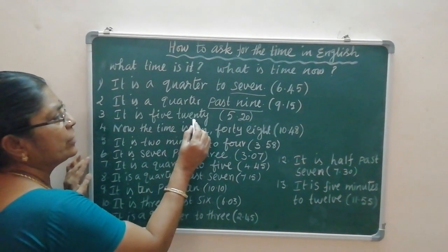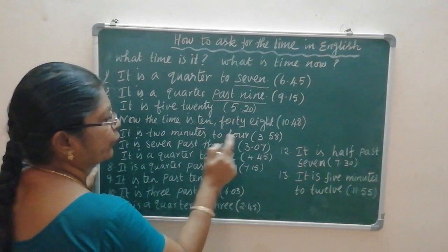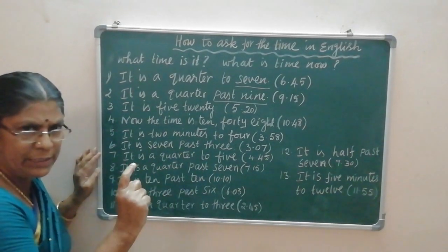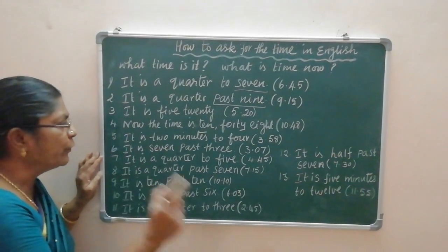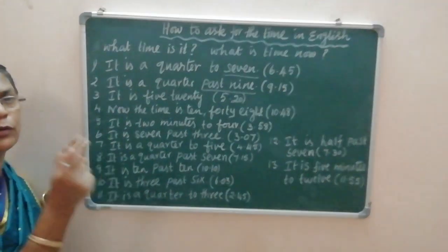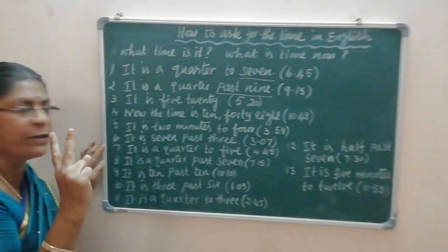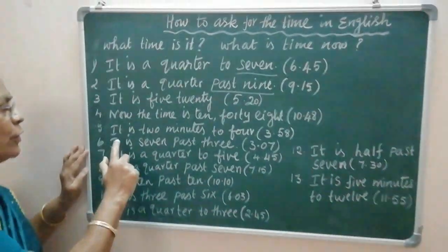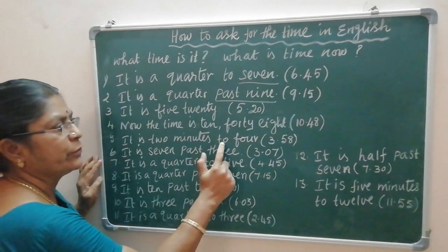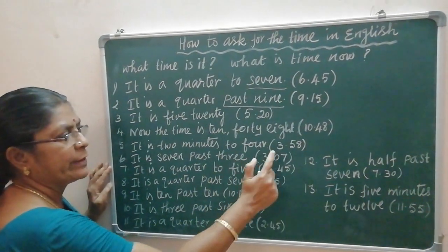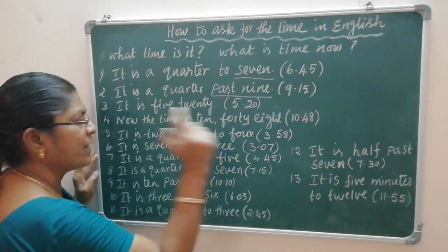It is 5:20. It is two minutes to four — so it has not yet reached four. Just how many minutes more? Two minutes more for reaching four. So you have to say: it is two minutes to four. That means the time is 3:58.